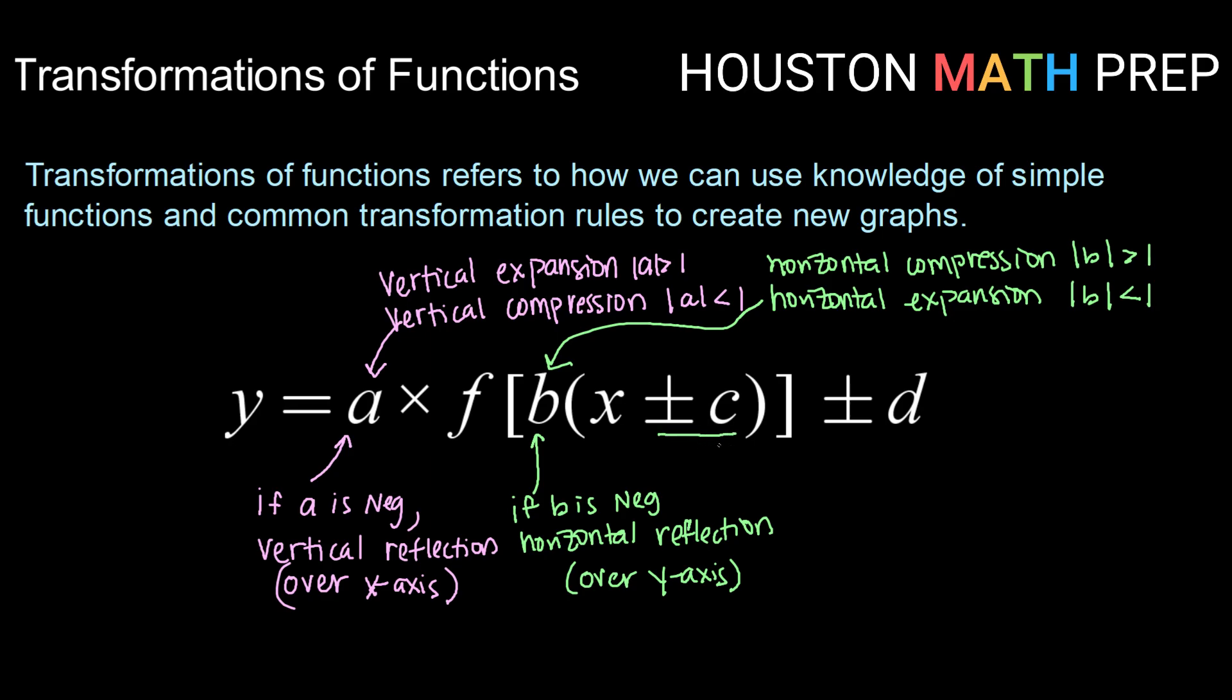For this plus or minus c on the inside, that's going to be a horizontal shift. If it is plus c, so if we have x plus a value, then that is going to take us to the left. If it is minus c, that is going to take us to the right. So it's kind of opposite of what you might imagine. Plus we usually think moving us on the number line towards the right, but it's going to go opposite. And minus would normally make us think left, but it's going to go opposite.